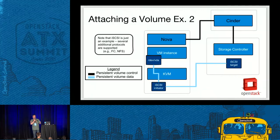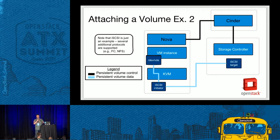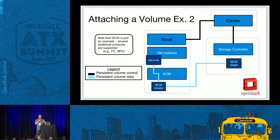Another example with a vendor backend like HP or Dell is basically the same exact process. The only difference is the iSCSI target lives on the storage controller itself rather than on the Cinder controller. Nova drives Cinder saying it wants to do an attachment. Cinder creates the target and the export. Nova gets that information, discovers the volume, hands it off to the VM, and away you go.